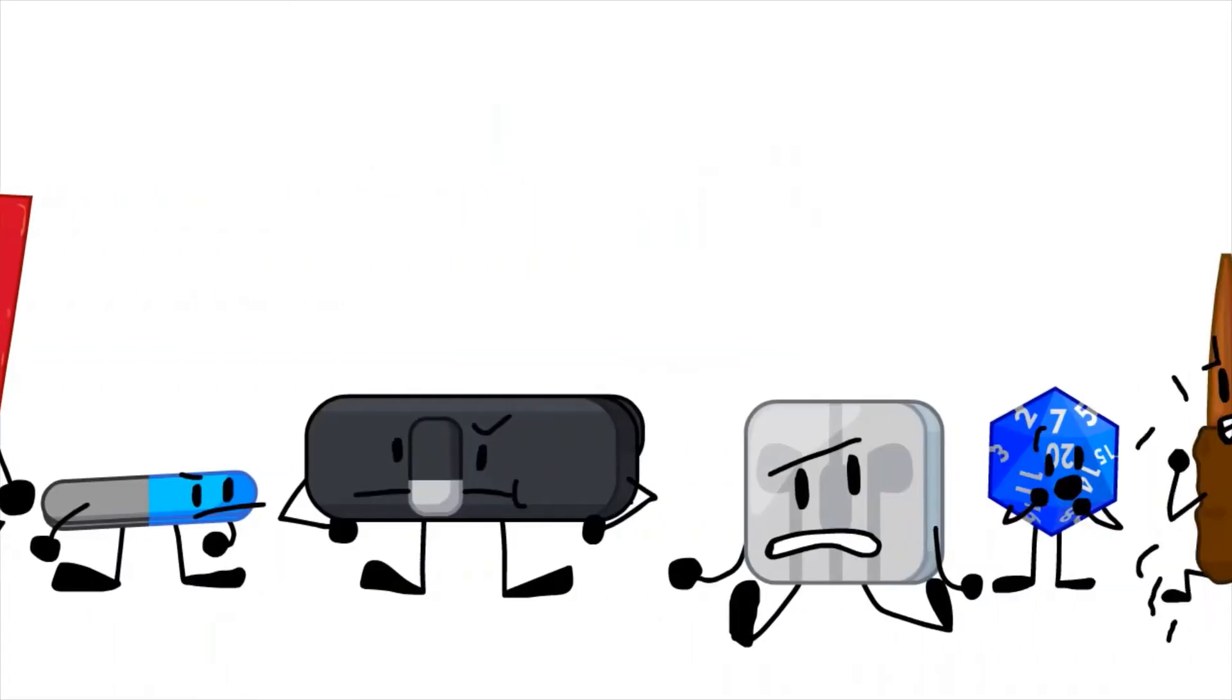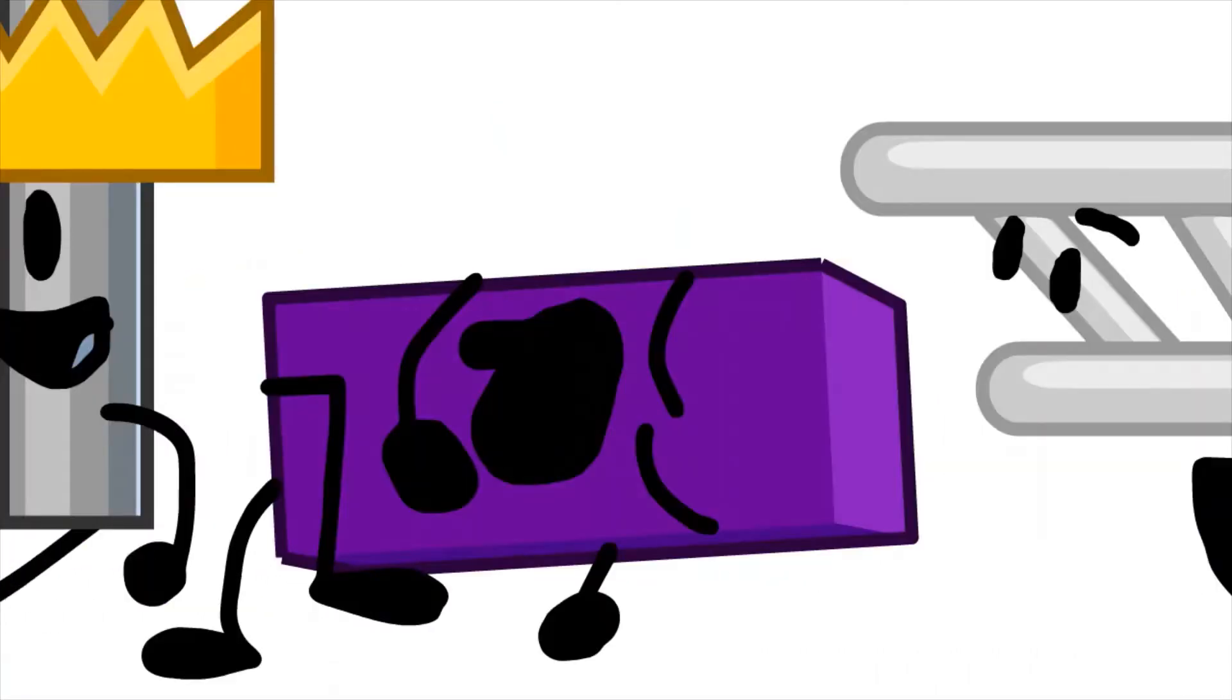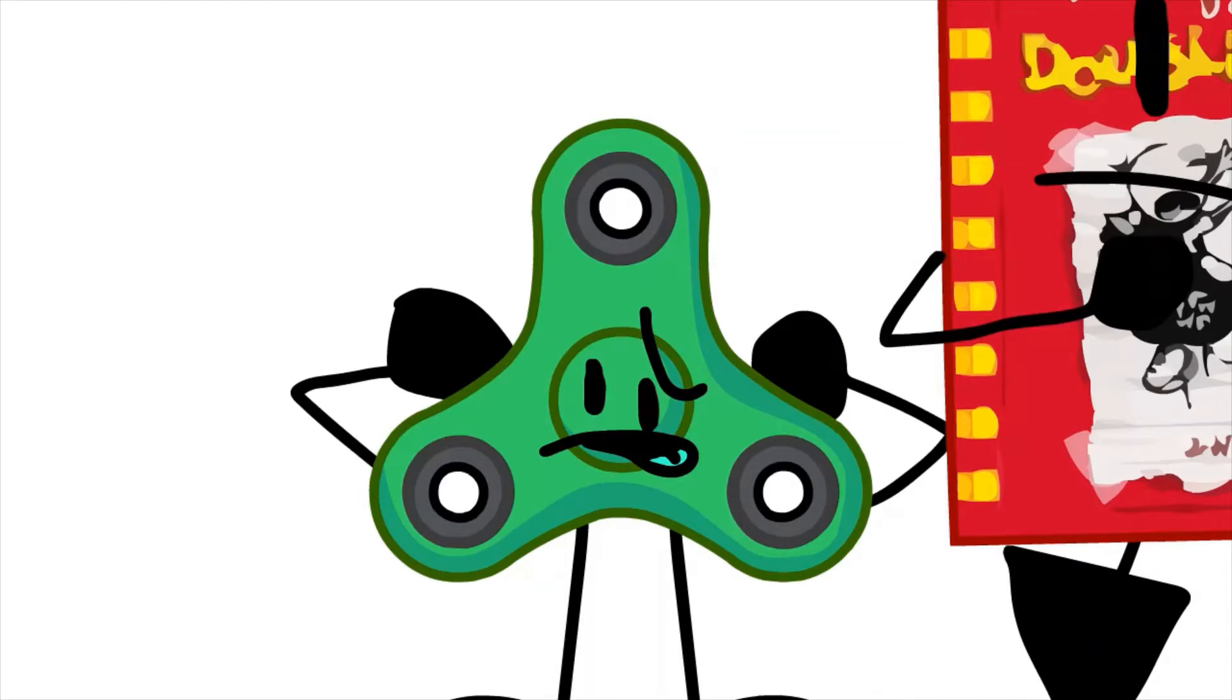Shut up, it's time for the elimination, guys. Let's go. Alright, if I say your name, that means you got a vote. So Purple Eraser and Daryl Wimpy Kid Double Down, you both got votes, I guess. I hope I didn't get a vote. I better not have got a vote.